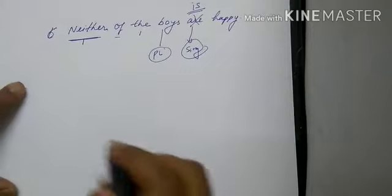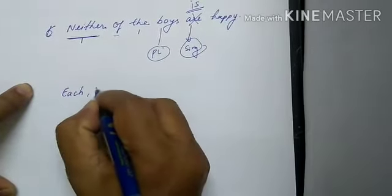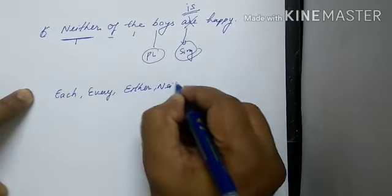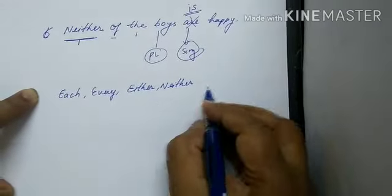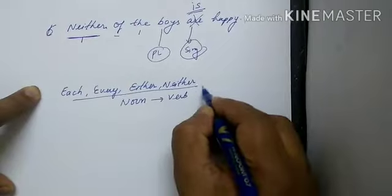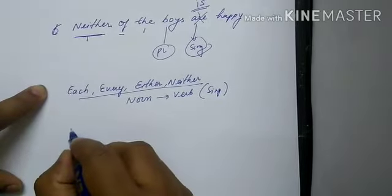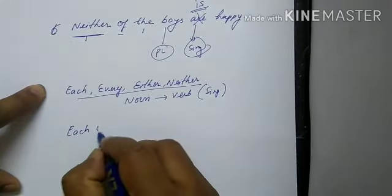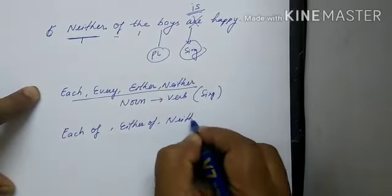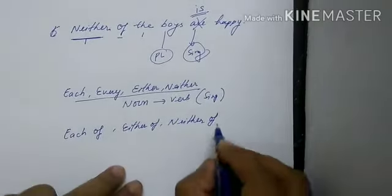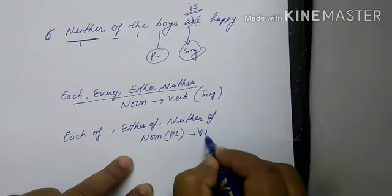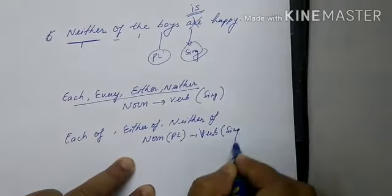Remember: after each, every, either, and neither, the following noun and verb are both singular. But if 'of' is added after each, either, or neither, the noun will become plural while the verb will remain singular. So to summarize — without 'of': noun singular, verb singular. With 'of the': noun plural, verb singular.